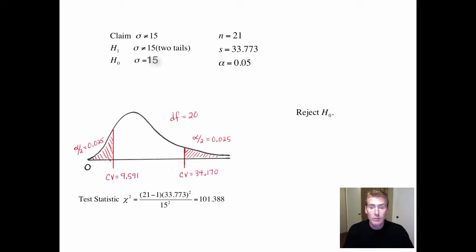So reject H sub O, which means we actually did prove something. And actually, since this lands to the right, that means the standard deviation is much higher. As you can see from the sample, this is much higher than a 15. So the claim is true. The standard deviation is not the same for first graders. It's actually much higher. There's a lot more variation for the scores of first graders.